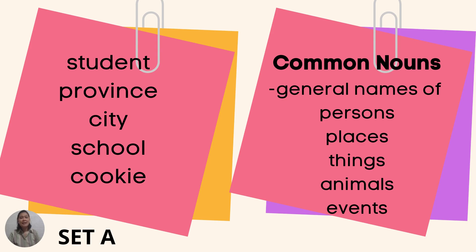Now, let's look back at the words used in the story. Set A are called common nouns. Let's read the words. Why are they called common nouns? These are common nouns because they are general names. When we say common nouns, they are general names of persons, places, things, animals, or events.